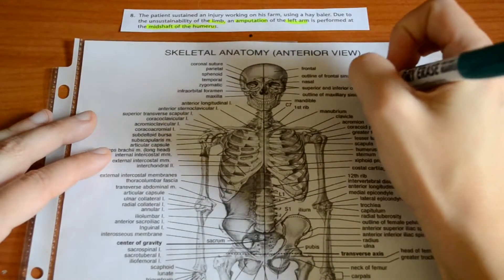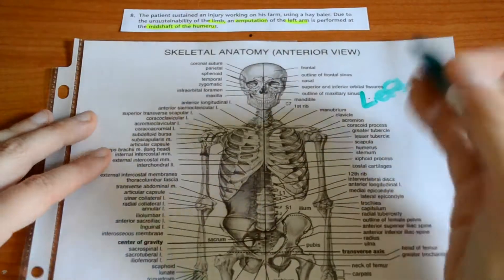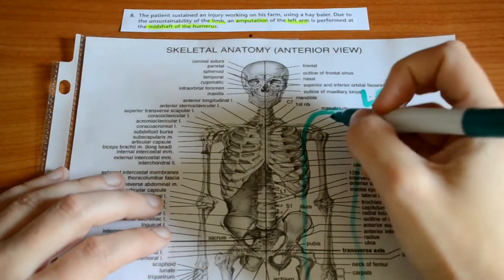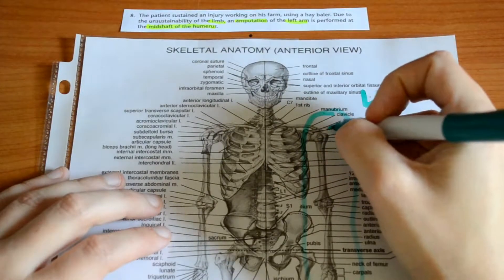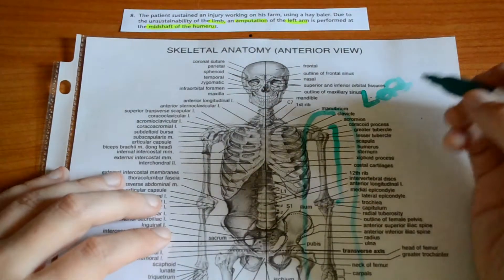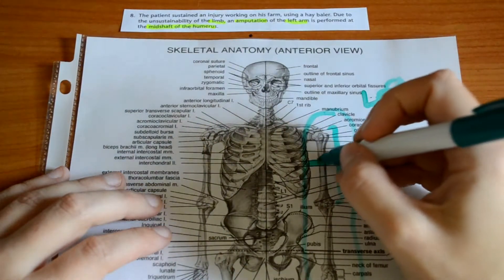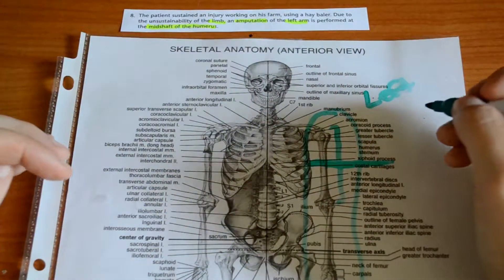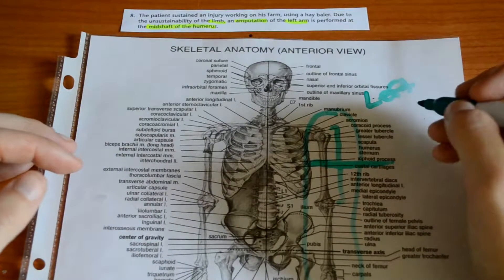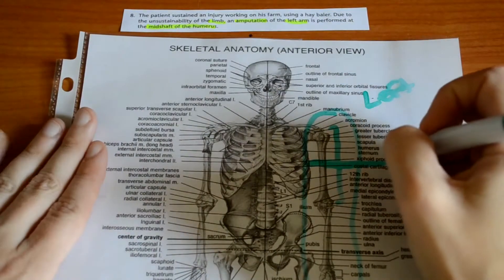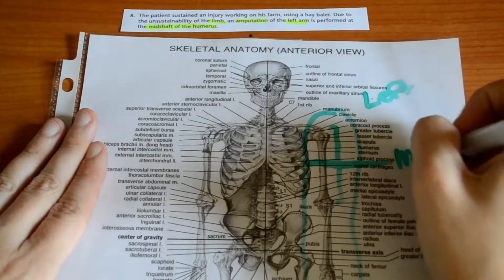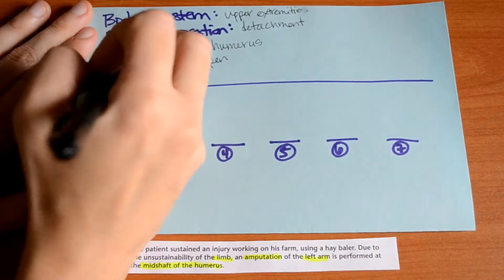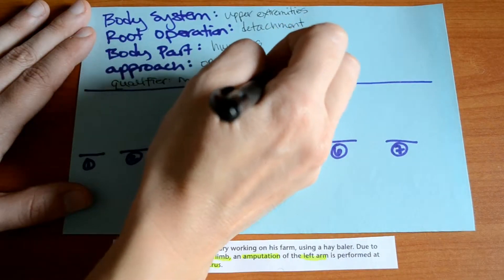This is our left side. So we'll be looking somewhere on this arm. Our humerus is this bone here. And then mid-shaft is right in the middle. And if we remember from the previous video, anything that happens at the mid-area of the shaft, that is a mid-amputation. So this might be in our qualifier, mid-amputation.